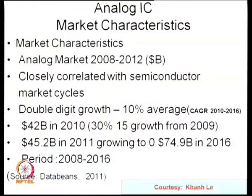The growth rate from 2010 to 2016 shows 42 billion dollars in 2010 — which was 30 percent growth from 2009 — growing to 145.2 billion in 2011, with an expectation of 74 billion dollars by 2016 for analog specifically. The total silicon market is currently around 800 billion dollars, with analog accounting for 10 to 12 percent.